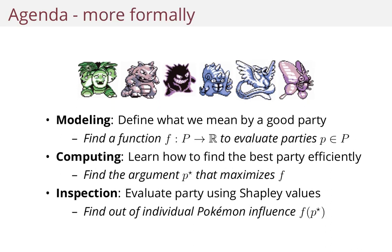More formally, we're going to do the modeling by defining a function f mapping from a party to a real number. So if you give me two parties, I'll be able to apply f, and whichever party gives me the highest score is the better party of the two. This way we have a method for comparing parties. Then we're going to find the argument that maximizes f. The domain is huge, so we're going to have to be smart about it. And finally, inspection — we're going to look at how each individual Pokemon in the party influences this value.